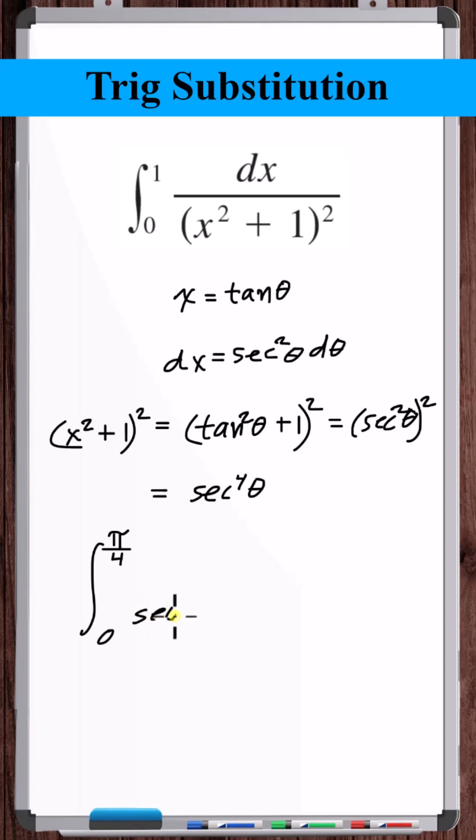X squared plus one squared is secant to the fourth of theta. dx is secant squared theta d theta. One over secant squared theta is cosine squared theta. So with the trig substitution, we've transformed the original definite integral into this definite integral.